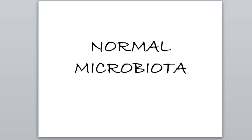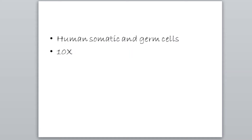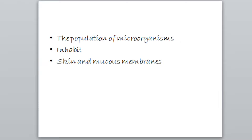So what do you understand by the term normal microbiota? Normal microbiota denotes the population of microorganisms that inhabit the skin and the mucous membrane of a healthy normal person. These microorganisms that live inside and on humans are estimated to outnumber human somatic and germ cells by the factor of 10. That means these normal microbiota are a group of microorganisms that live on your skin and mucous membrane like normal residents.